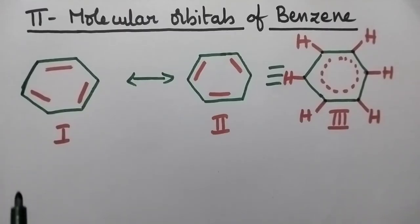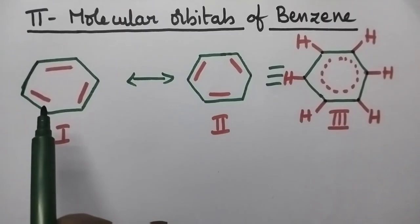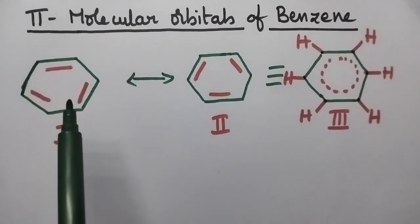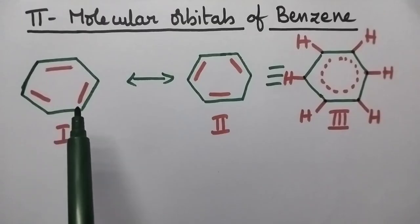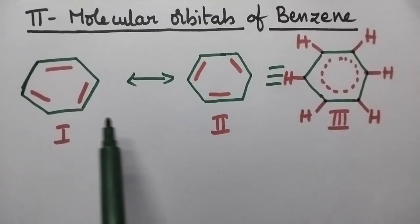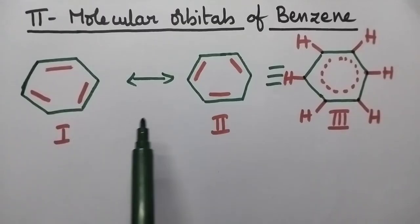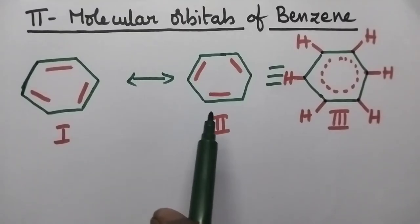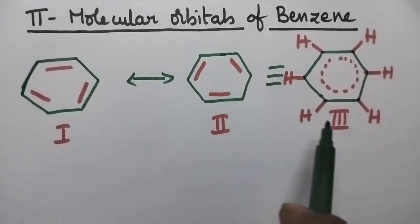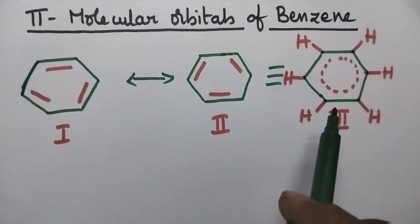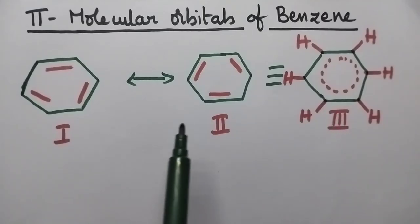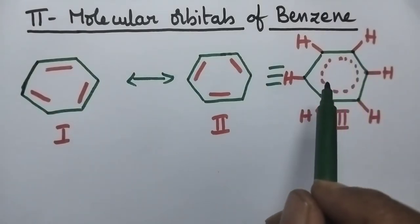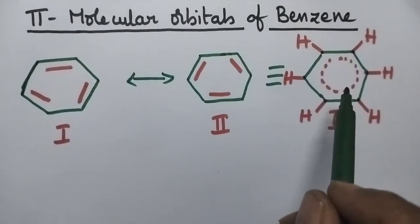Benzene has a hexagonal structure in which the double bonds are present between the carbon atoms. Structure 1 and structure 2 are equivalent structures. The only difference is the position of the double bonds. Structure 3 is the resultant of structure 1 and 2 in which each carbon atom has partial double bond character.